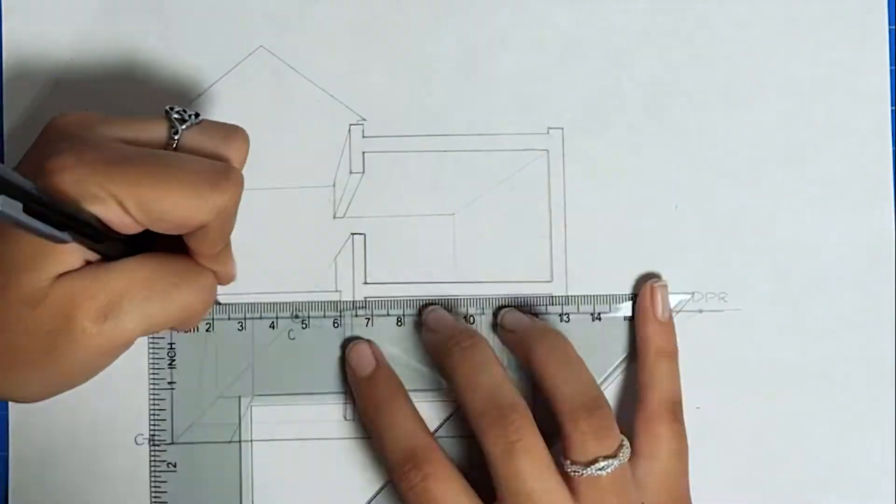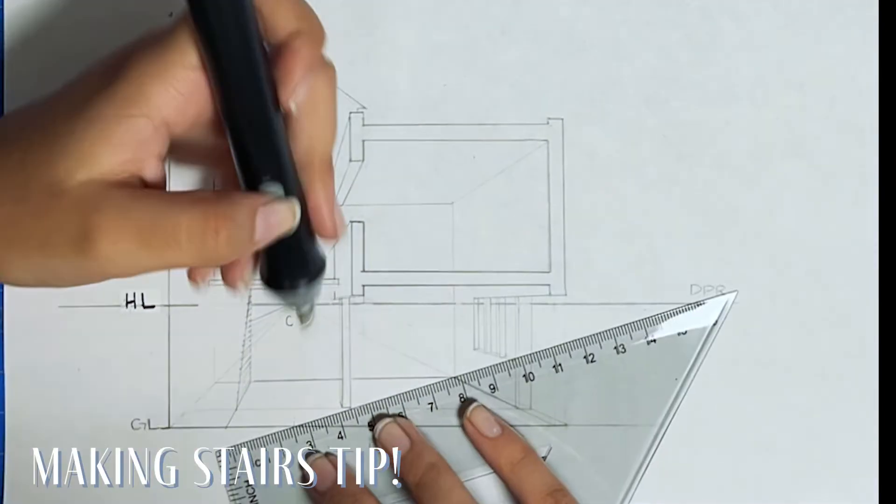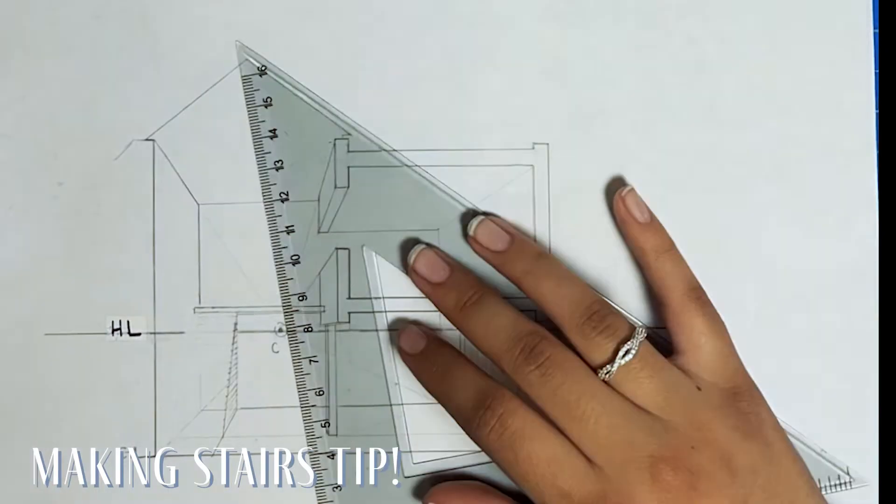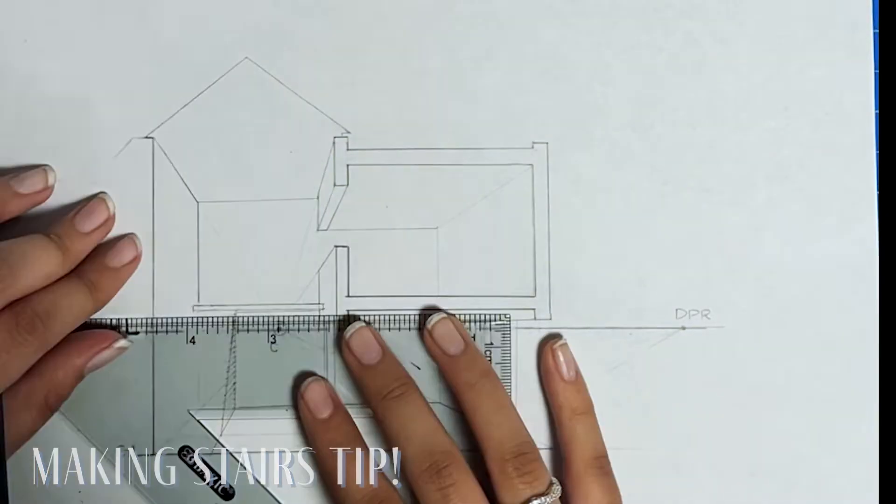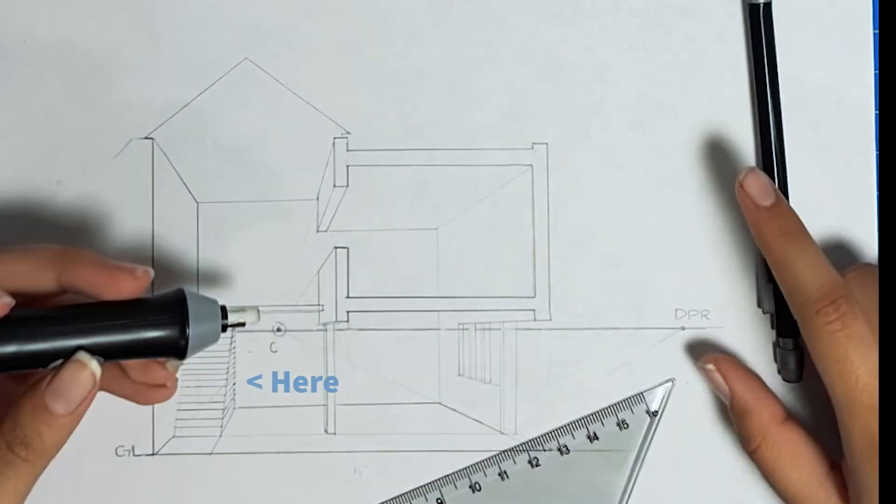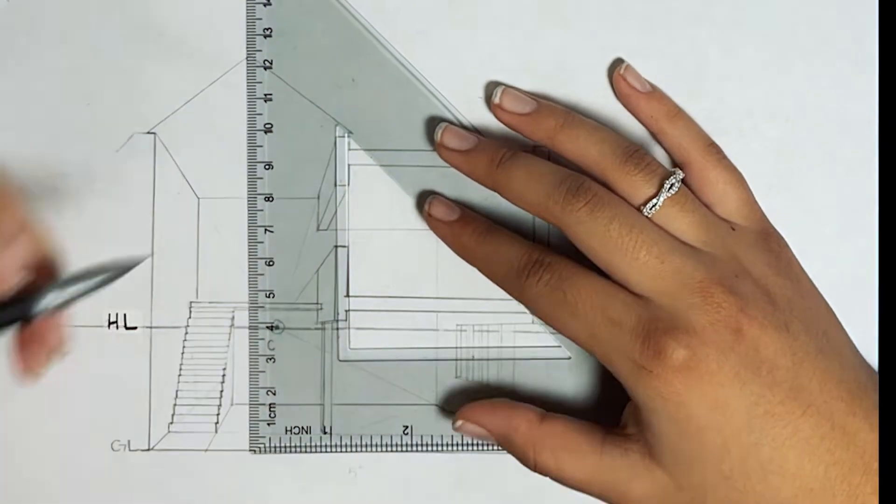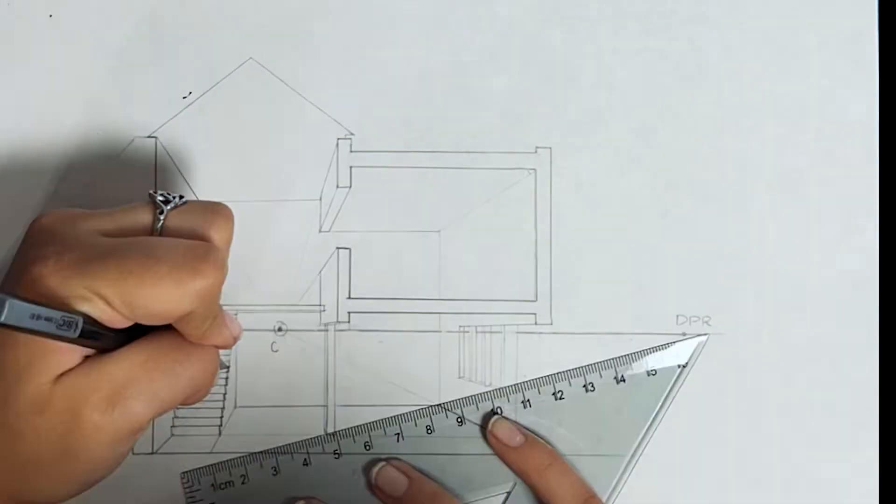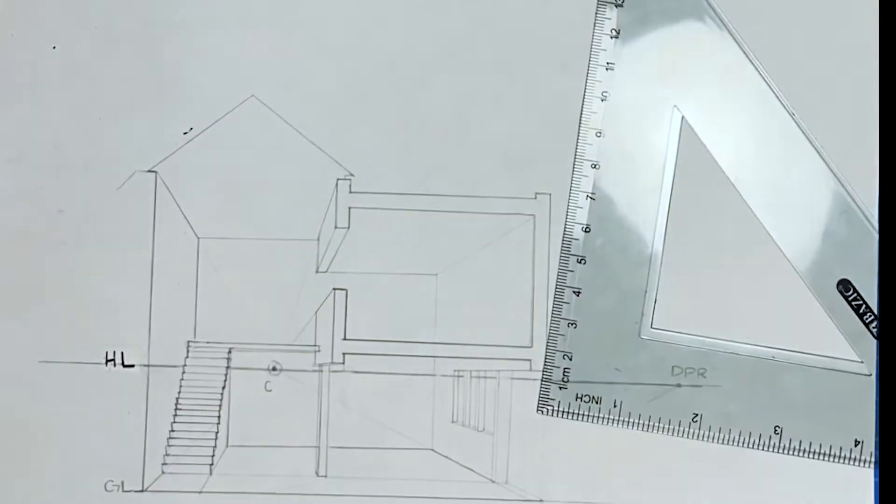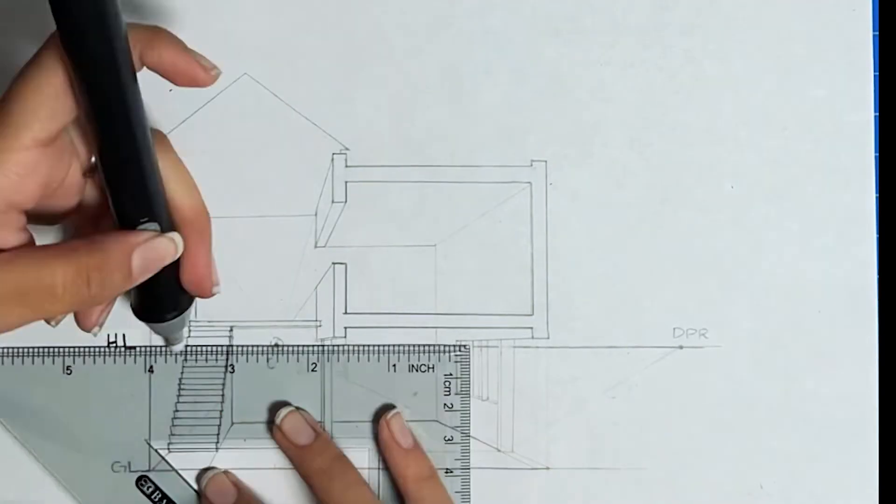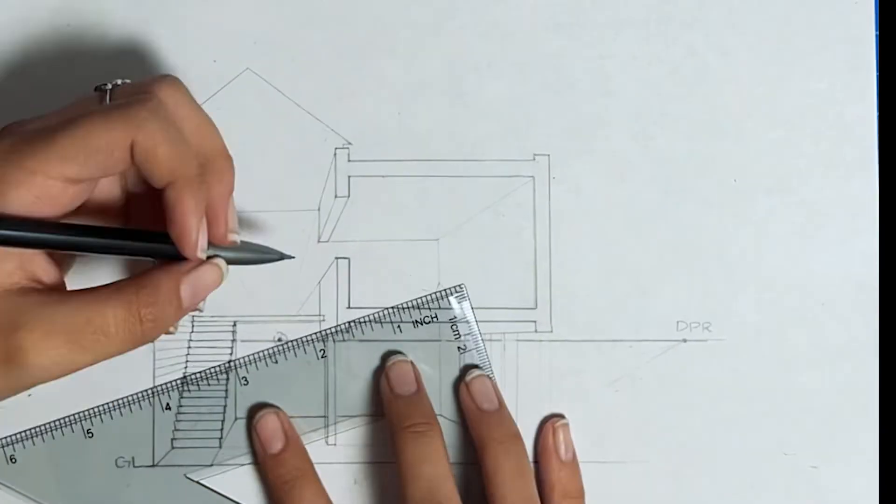And now we're going to make stairs. So as a tip for stairs, you're going to want to make like a wedge shape, but if you line up your ruler against the back wall of your staircase, you can actually create evenly spaced stairs using the ticks of your ruler. You just mark out the spots and very carefully use your center point.